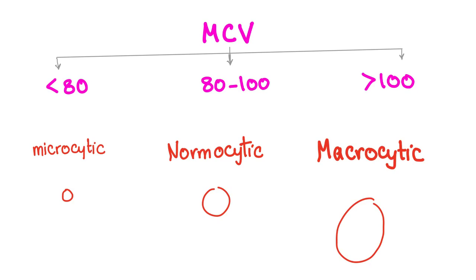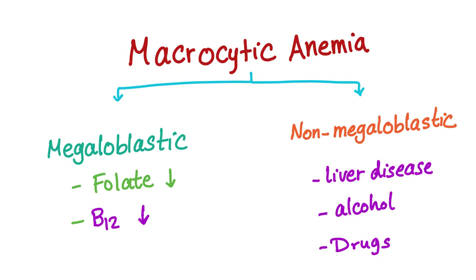Macrocytic anemia will have more than 100 femtoliter of the MCV. Macrocytic anemia has two different types, megaloblastic and non-megaloblastic. Vitamin B12 and folate are from the megaloblastic causes. Why megaloblastic?